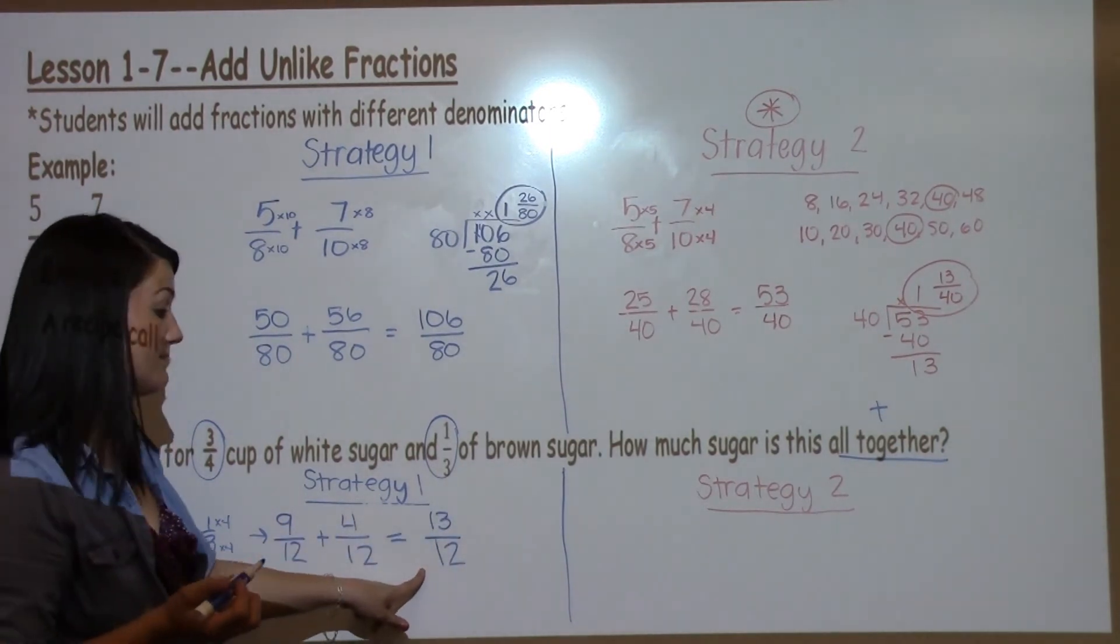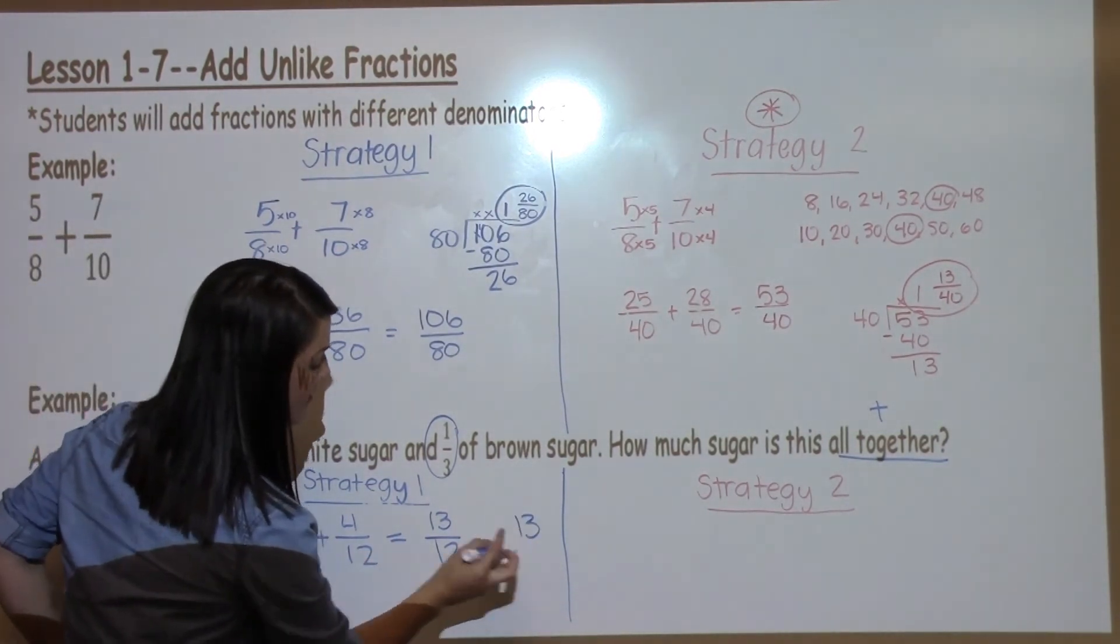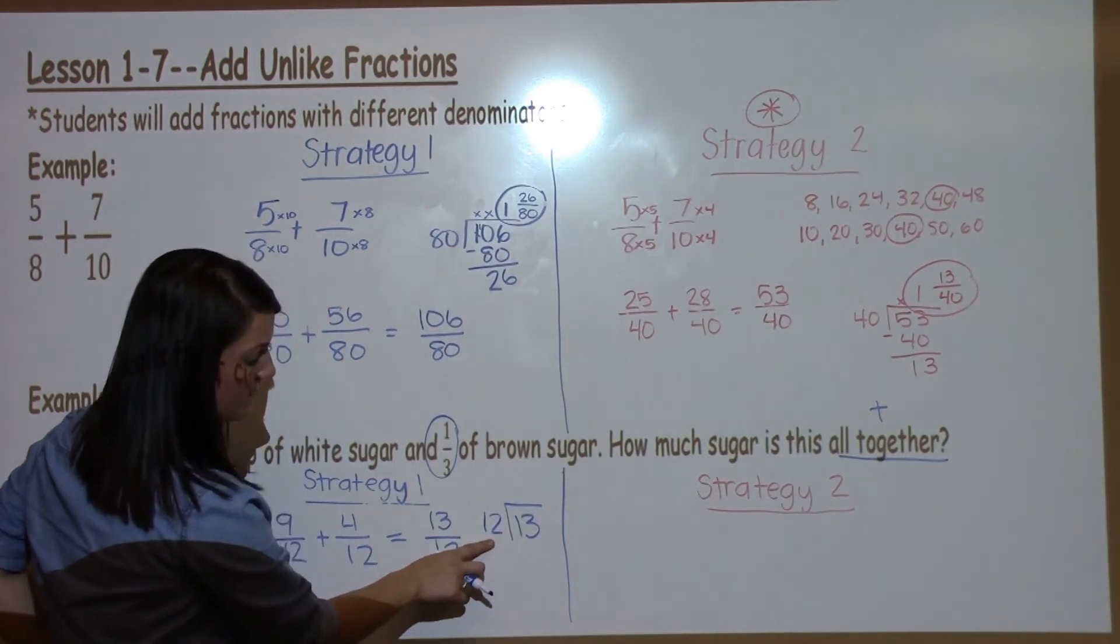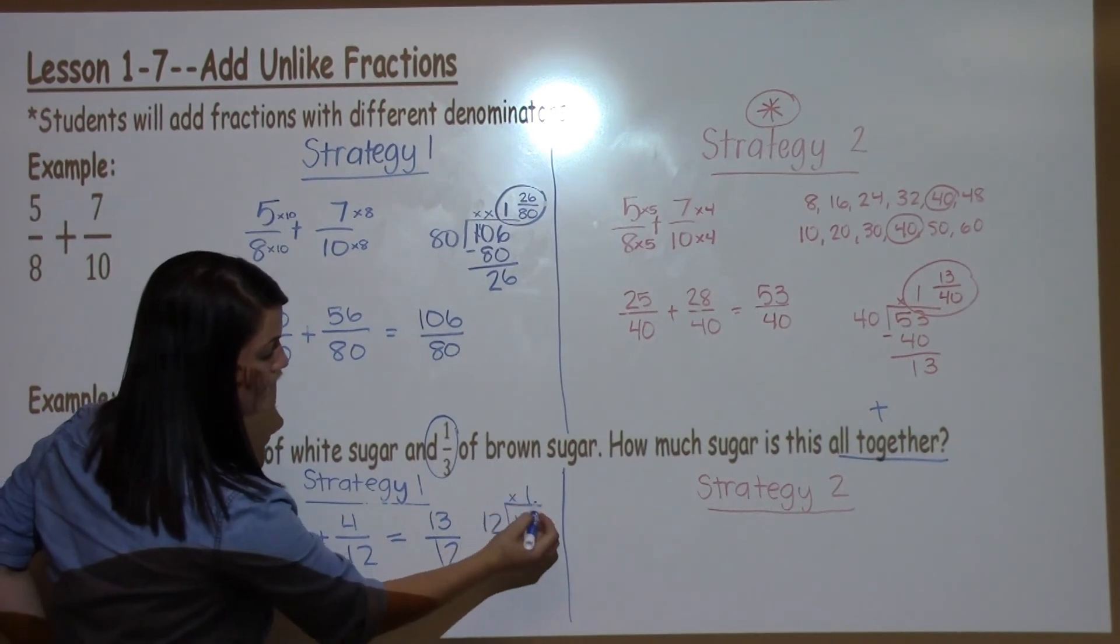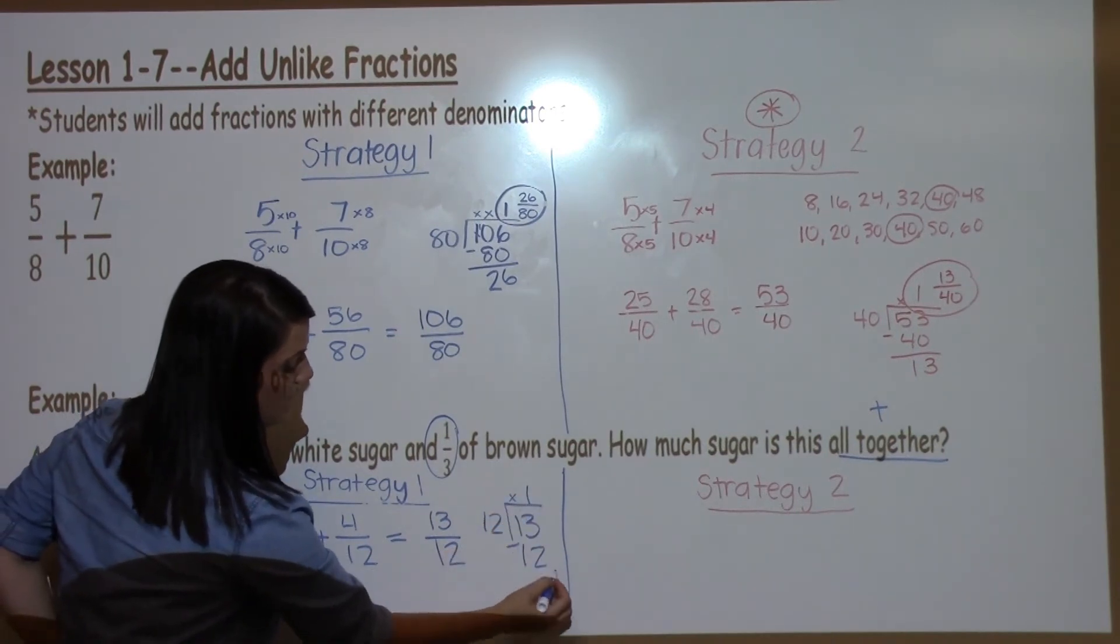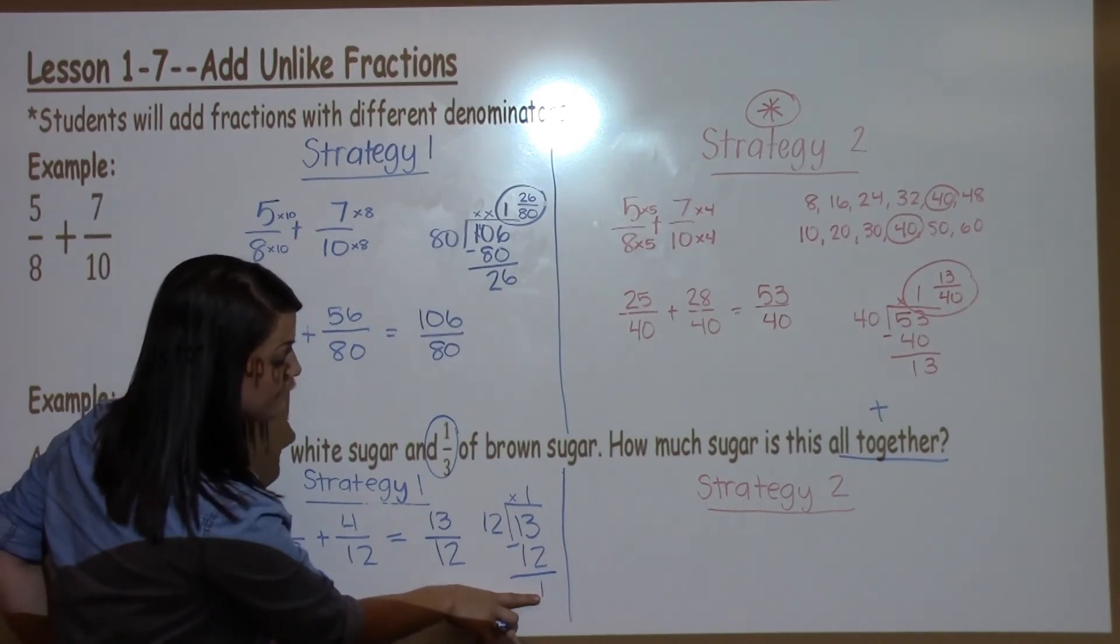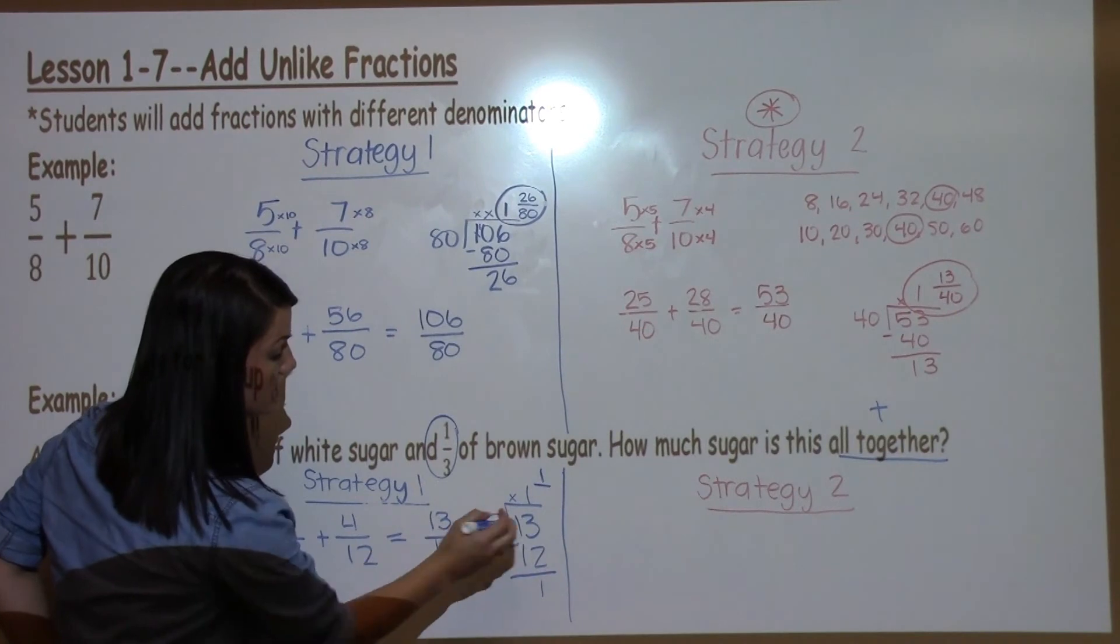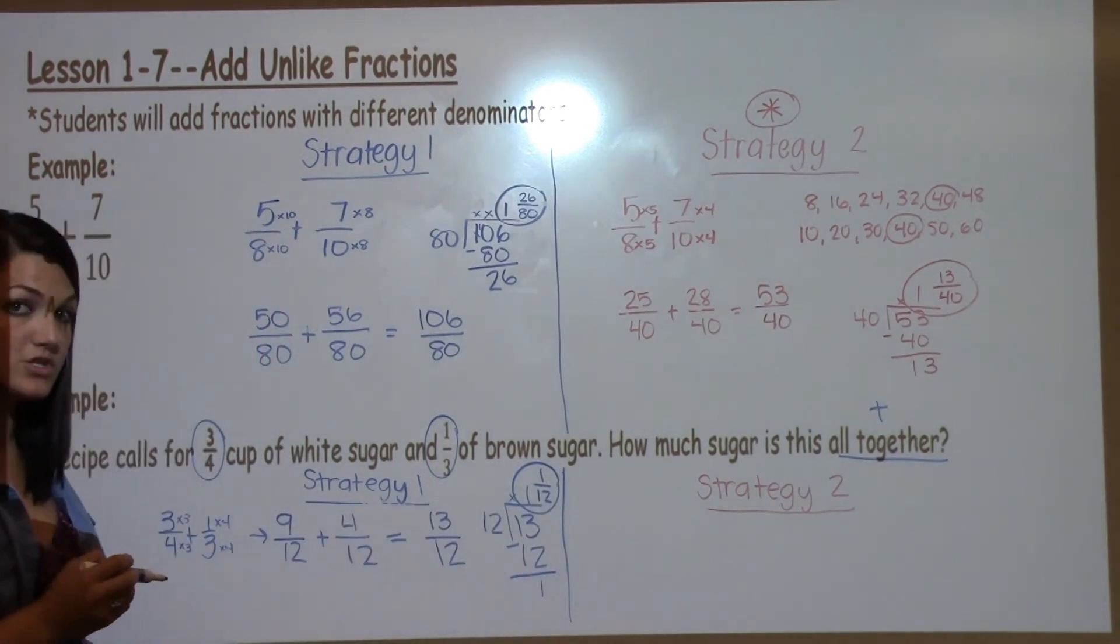This fraction should look funny. The top is bigger than the bottom, so I have to divide to make it proper. 13 divided by 12. 12 cannot go into 1, but it does go into 13 one time. When I subtract, I'm just left over with 1. My bottom, whatever I'm left over with, goes at the new numerator. 12 is the denominator for an answer of 1 and 1/12.